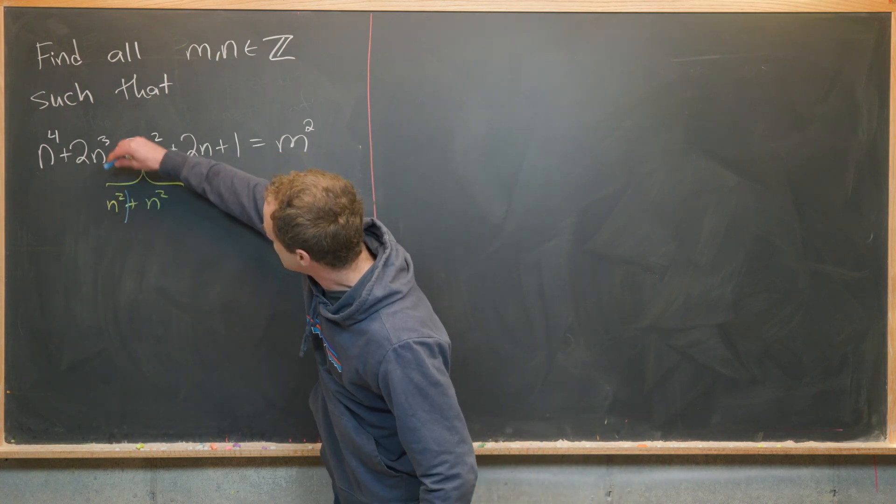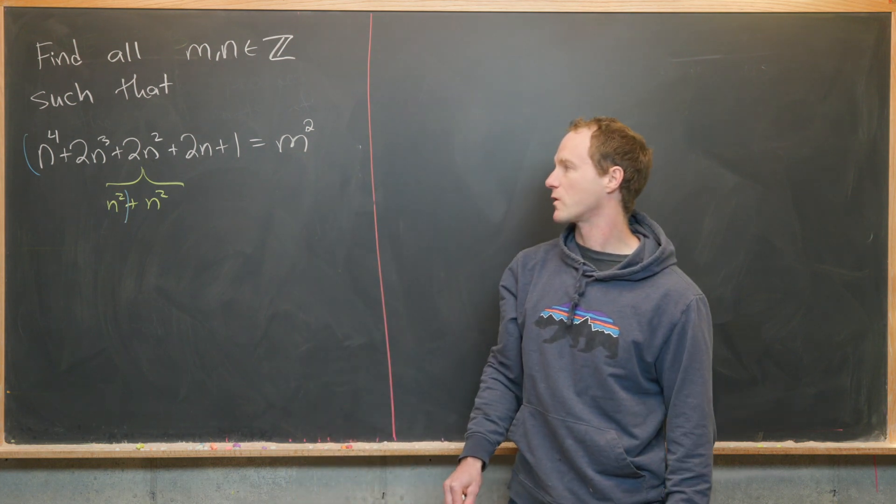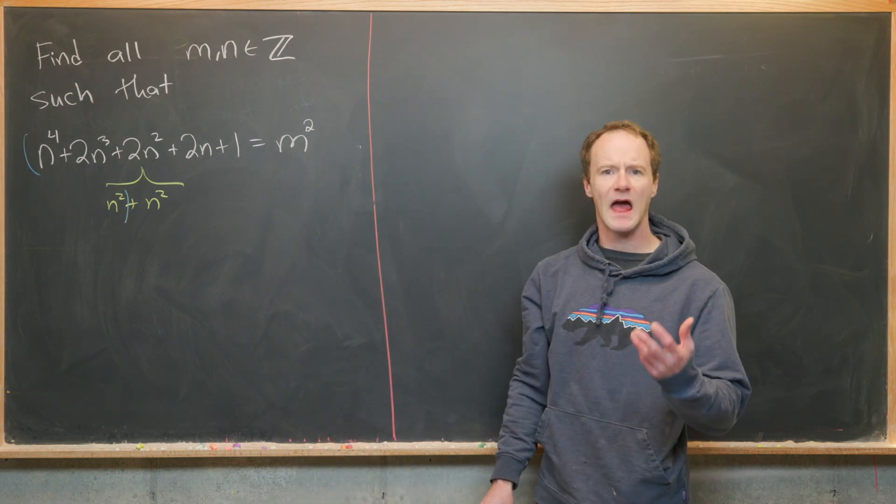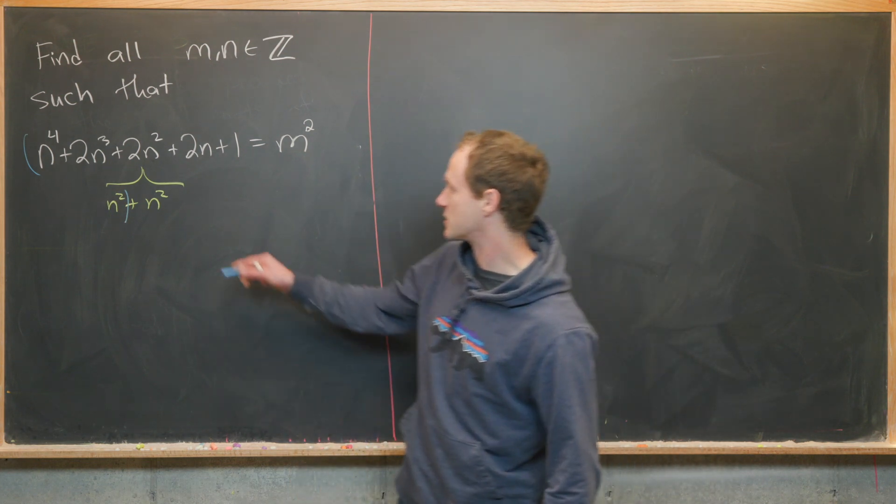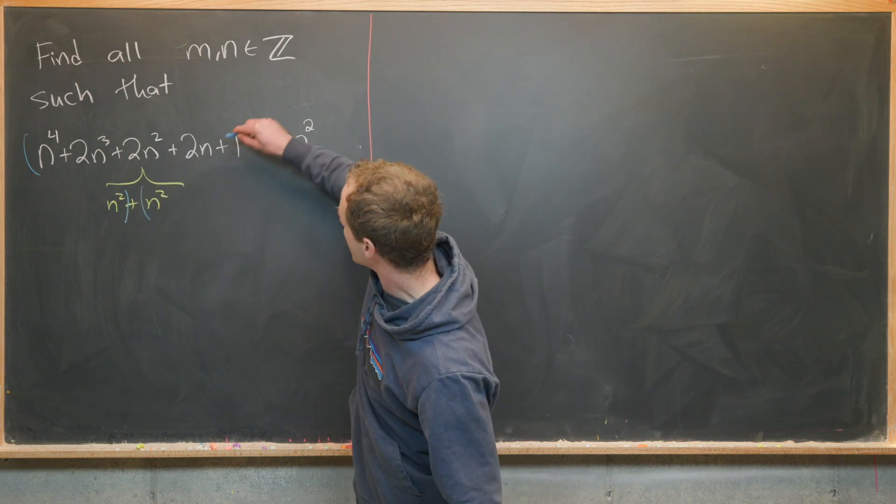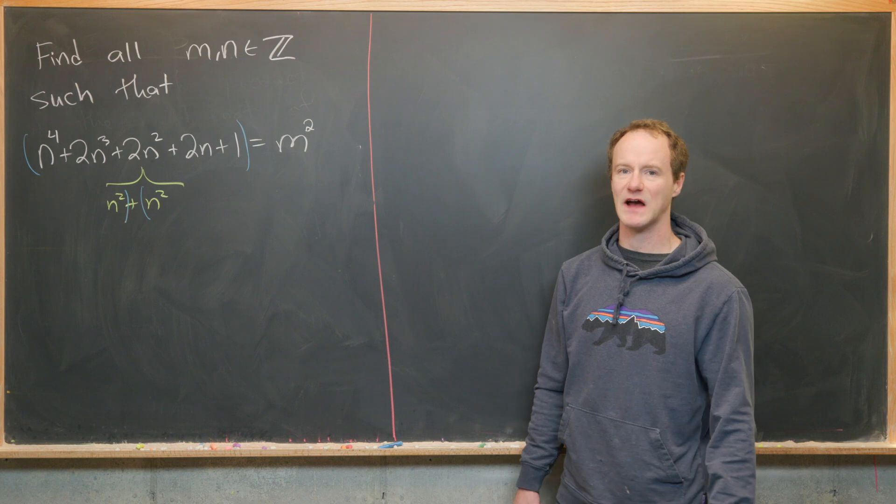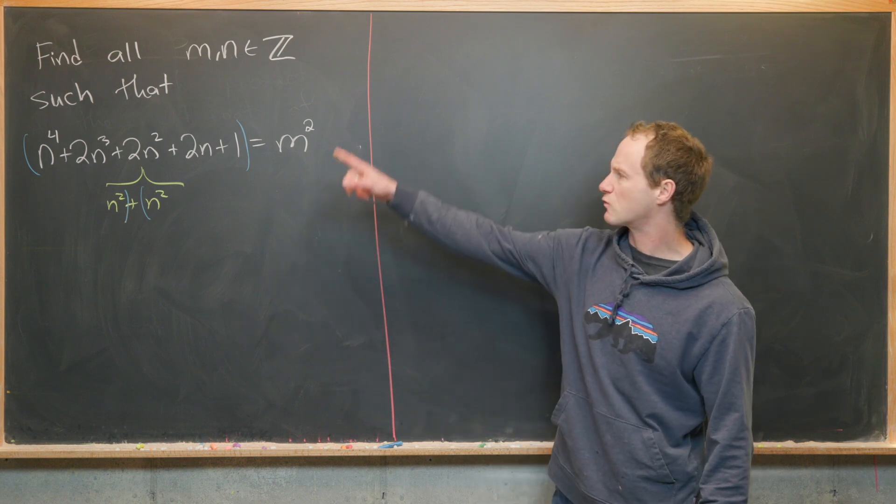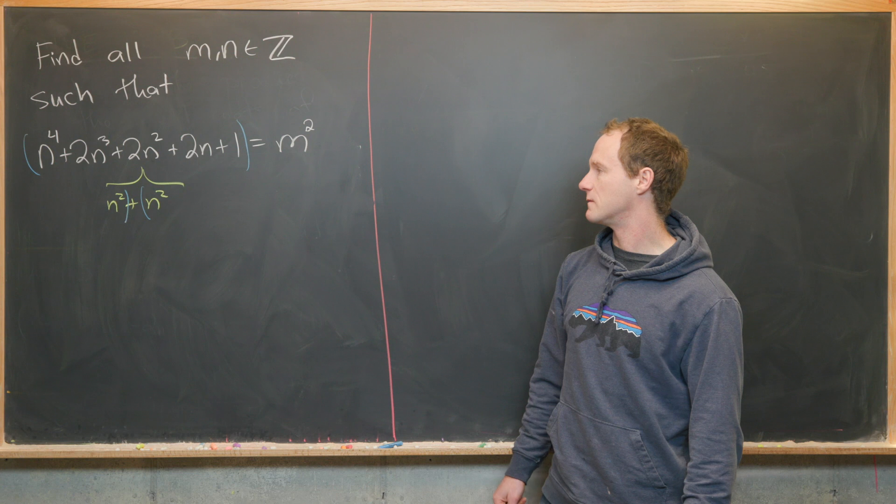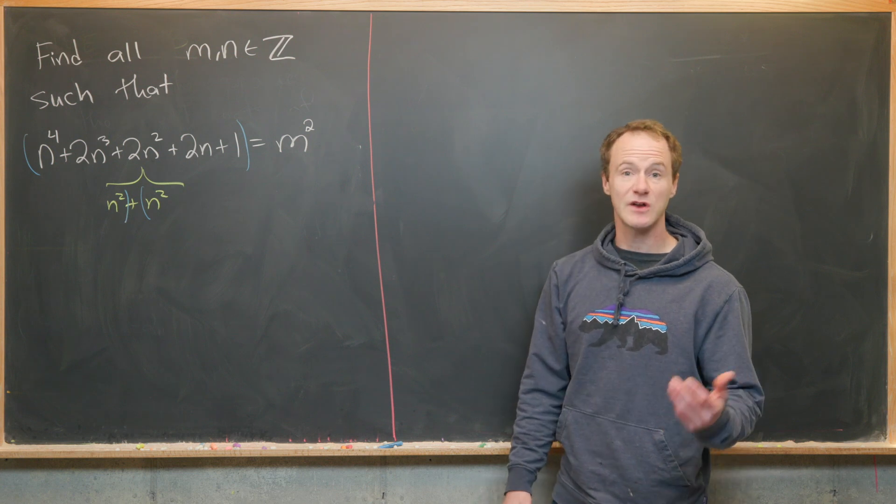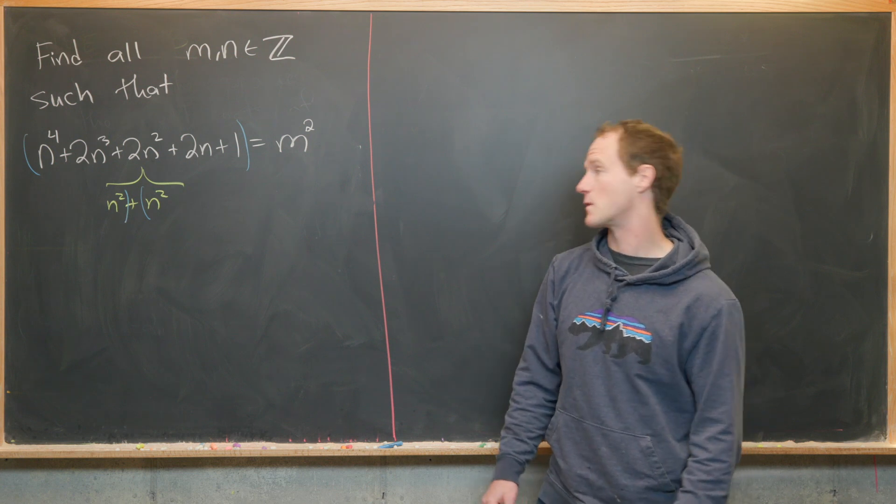Notice this n squared can be grouped with n to the fourth plus 2n cubed, and we can take out a greatest common factor. Furthermore, this n squared can be grouped with 2n plus 1 and that easily factors. So let's use this trick to solve the problem.